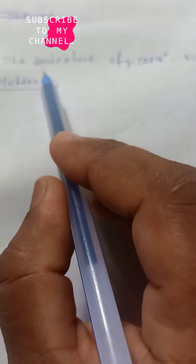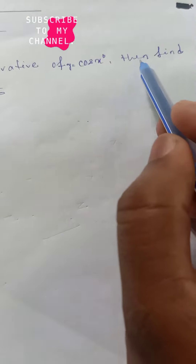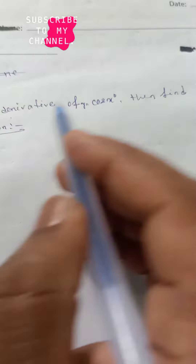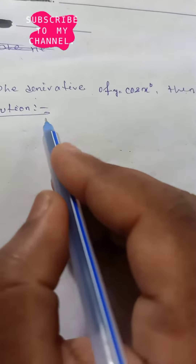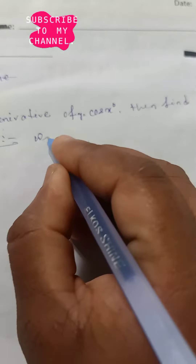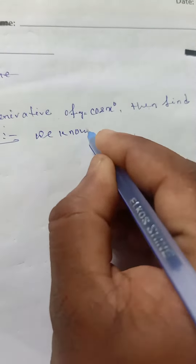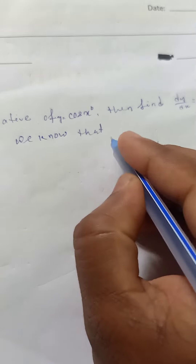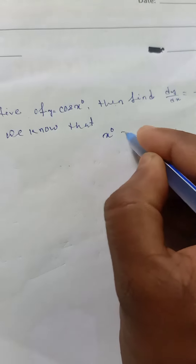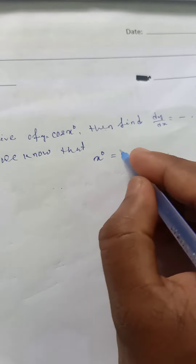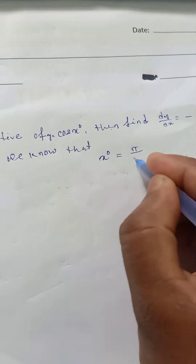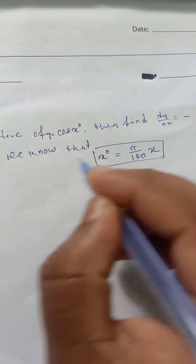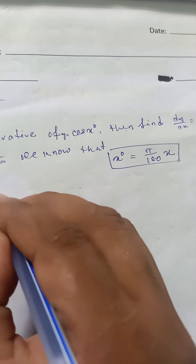Find the derivative of y = cos(x°), then find dy/dx. We know that x° is equal to π/180 into x. Using this formula, we proceed with differentiation.